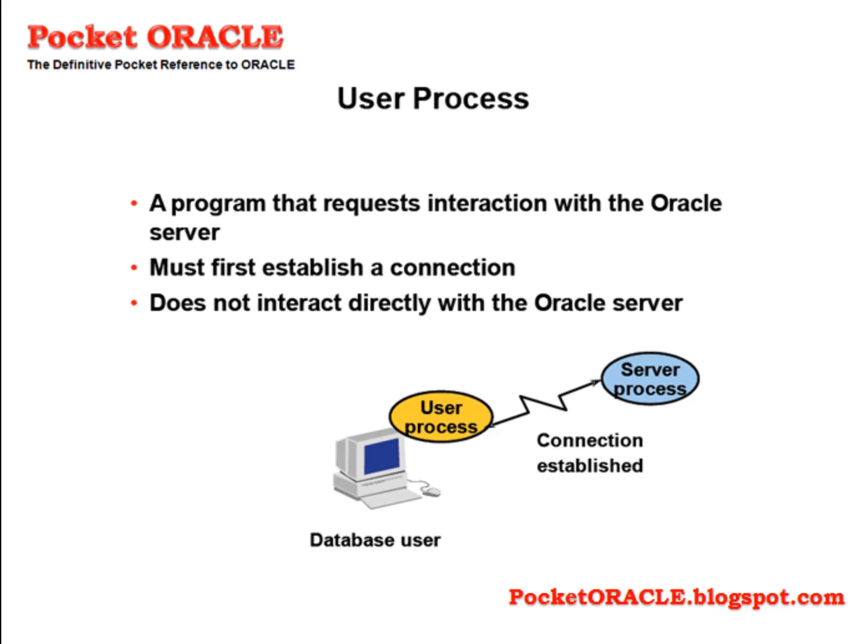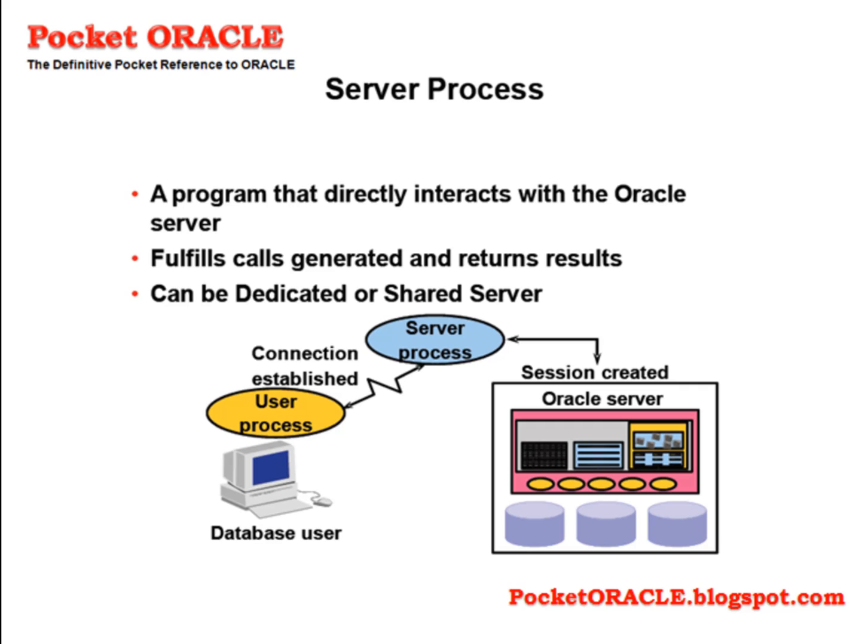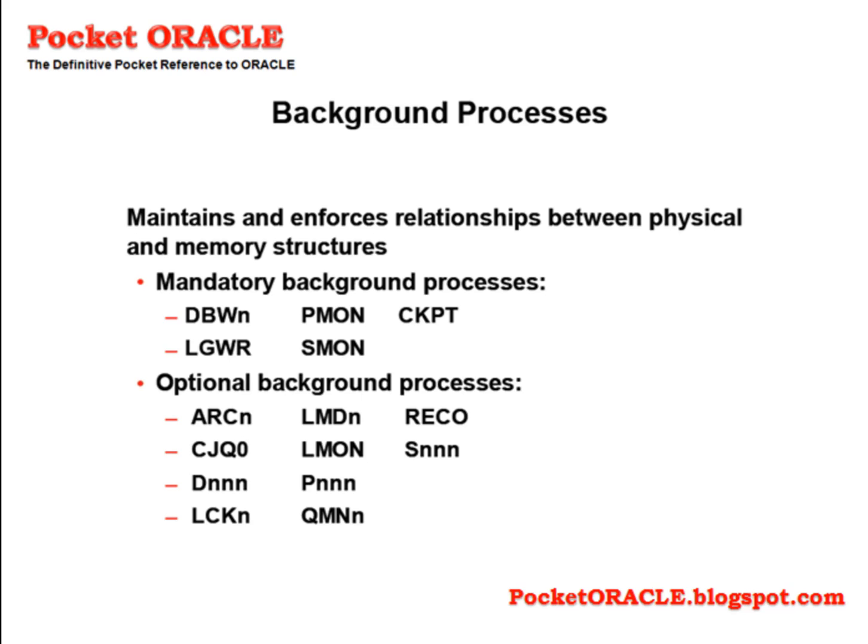The user process is a program that requests interaction with the Oracle server. It starts at the time a database user requests connection to the Oracle server. It must first establish a connection and does not interact directly with the Oracle server. The server process is a program that directly interacts with the Oracle server. It connects to the Oracle instance and is started when a user establishes a session. It fulfills calls generated and returns results, and can be a dedicated or a shared server. The background process is started when the instance starts and maintains and enforces relationships between physical and memory structures.